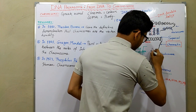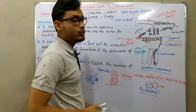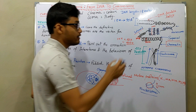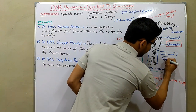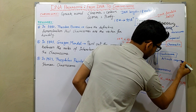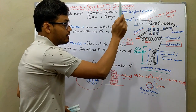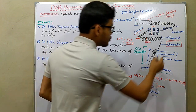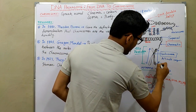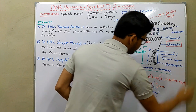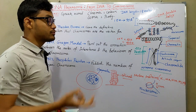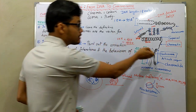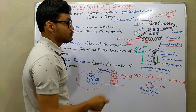At 400x magnification, we can clearly observe a metaphase chromosome. Each individual chromosome is joined to another by a common point known as the centromere. The centromere is the point where two chromosomes attach themselves, and it is an AT-rich sequence — meaning adenine and thymine are abundant in the centromere region. In the metaphase chromosome, those individual chromosomes are known as chromatids.